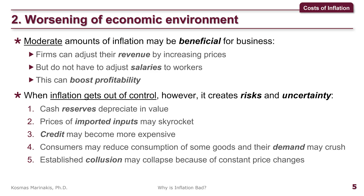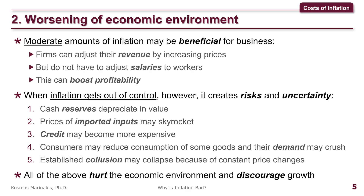Fifth, established collusion may collapse because of constant price changes. For instance, if all firms agreed to charge $10 and there is around 50% inflation, some may increase the price to $15 but others to $14, so some firms may undercut not by cutting prices but by increasing them less than their competitors. The collapse of collusion is hardly a societal problem in itself, yet the instability that causes it is. All of the above hurt the economic environment and discourage growth.